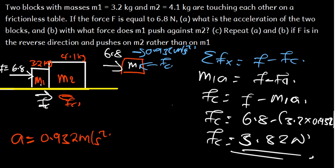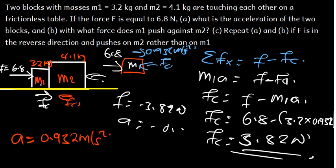Part C says to repeat A and B if F is in the reverse direction, pushing on M2 rather than M1. Since we are going in the opposite direction, everything changes sign. The acceleration will be −0.932 m/s² and the contact force will be −3.82 newtons.